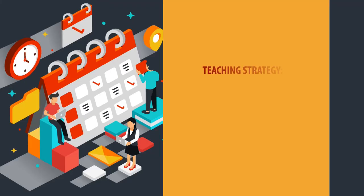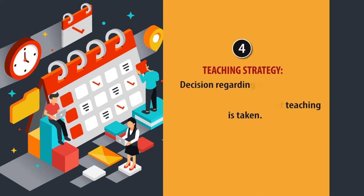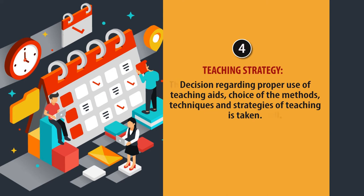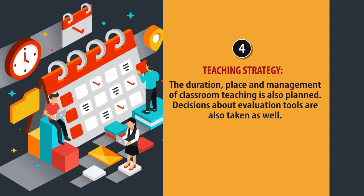The fourth operation of the pre-active phase is the development of an overall teaching strategy. At this stage, teachers take decisions regarding proper use of teaching aids, choice of methods, techniques and strategies of teaching. The duration, place and management of classroom teaching are also planned, and decisions about evaluation tools are taken at this point. These four operations complete the pre-active phase — teacher planning.